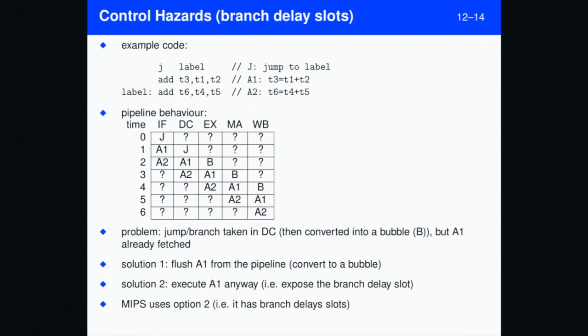We look in the pipeline behavior diagram. That jump instruction will proceed down the pipeline. It actually gets consumed in decode. So if you like, a bubble proceeds down the rest of the pipeline after jump. When we actually decode and figure out that we need to do the jump, we've already fetched A1.